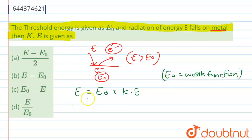So this is the relation between the total energy, threshold energy and kinetic energy. So basically our kinetic energy is now given as the difference of the total energy E falling on the metal surface and its threshold energy E₀. So this is the relation by which we can find the kinetic energy.